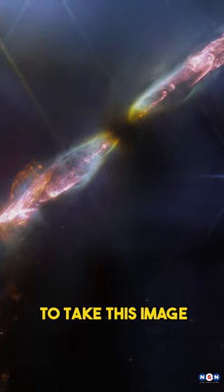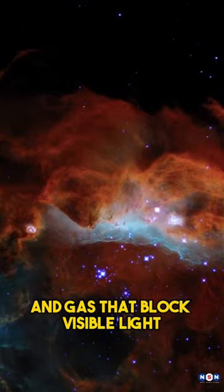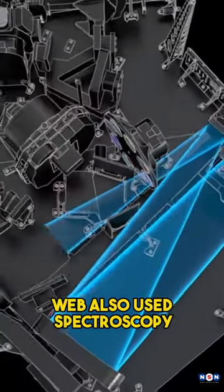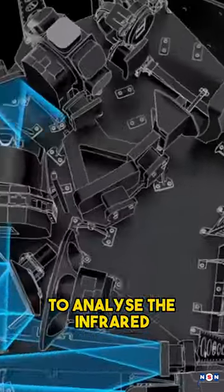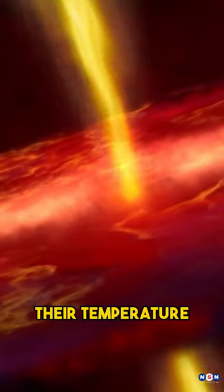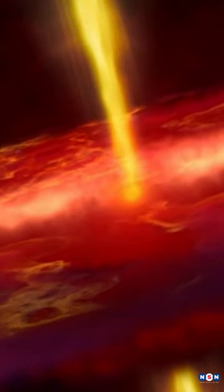Webb used its near-infrared camera to take this image, which can see through dust and gas that block visible light. Webb also used spectroscopy to analyze the infrared light from the outflows, which can tell us their temperature, density, velocity, and composition.